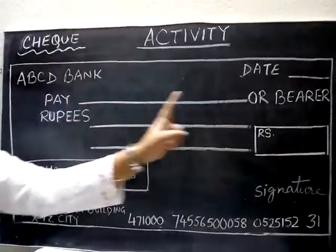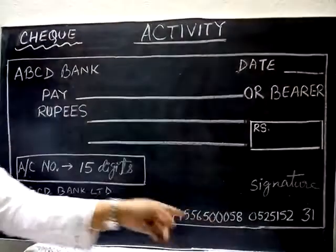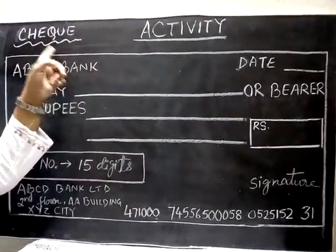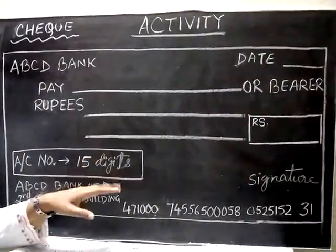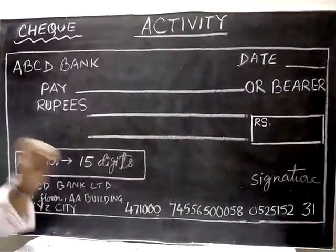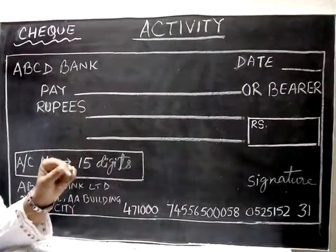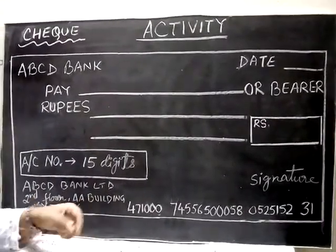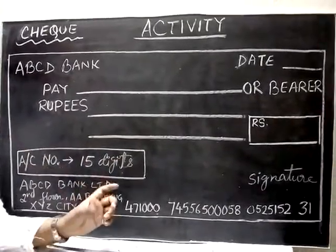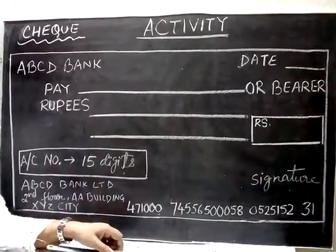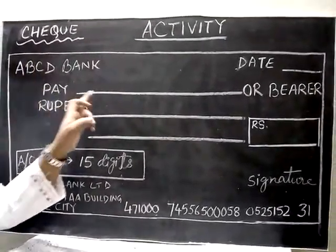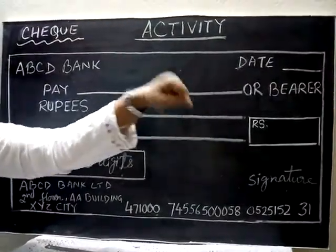Here you can see a drawing on the board. This is a rectangle and inside it I have filled many things. Basically it is a cheque — a bank cheque. We have not come to study what a cheque is exactly; we will do our maths only, but in a fun way. A cheque is a document which orders a bank to pay a certain amount of money from one person's account to another.